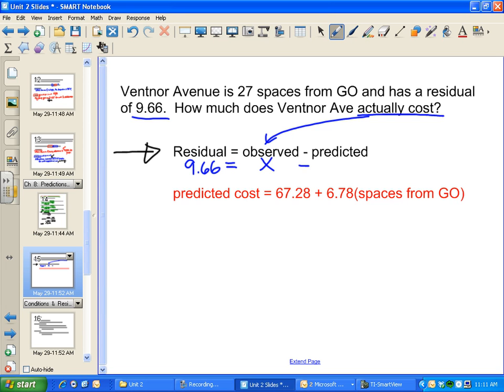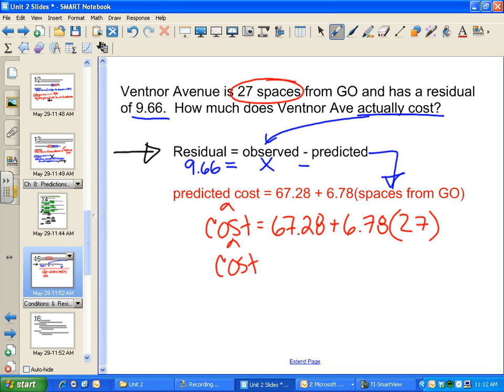Then I'll subtract the predicted amount. I don't have that given in the story problem, but don't panic—we can figure it out. Predictions come from our equation. We just worked on that. I can get a predicted cost by using my equation and putting in 27 spaces from GO. My predicted cost is $250.34.